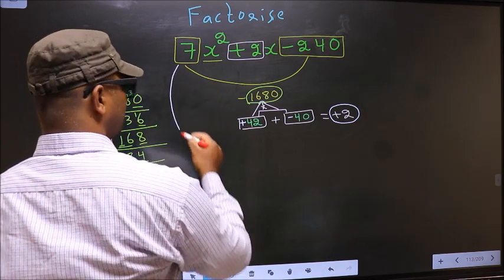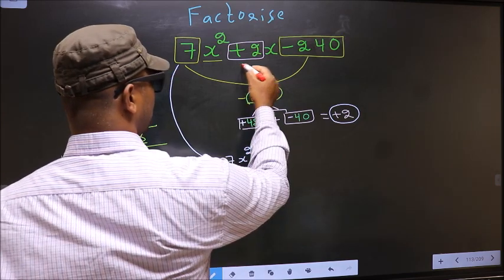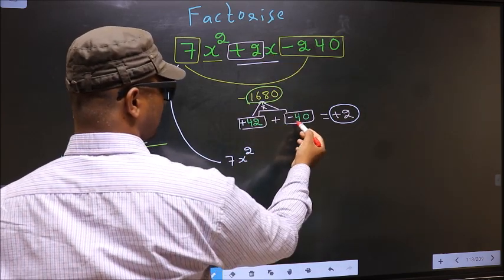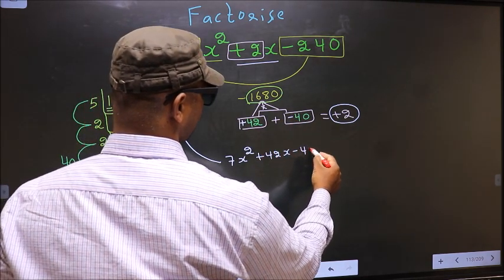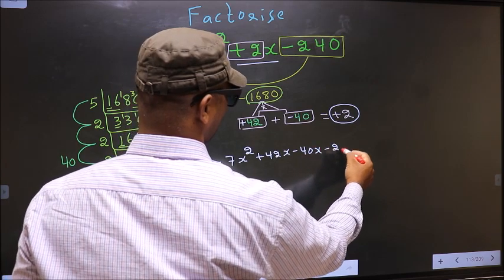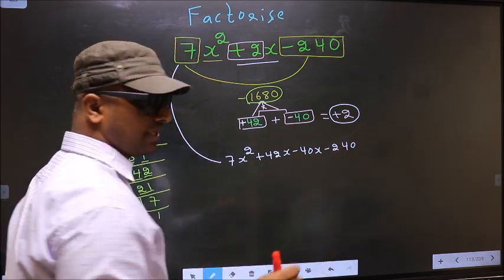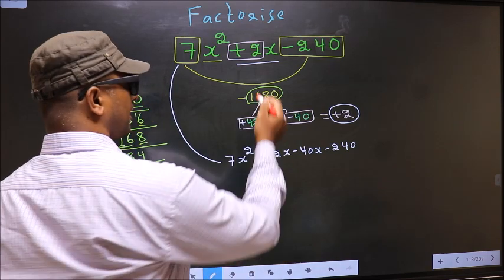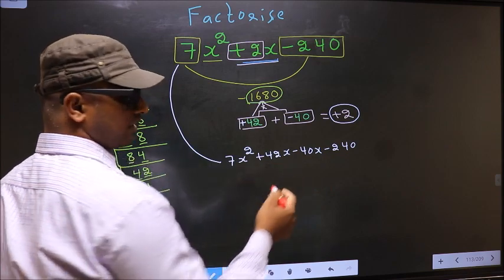Now you change this to 7x². In place of +2x, now we should write this: +42x - 40x - 240. Did you understand? In place of +2x, we have written this. Next.